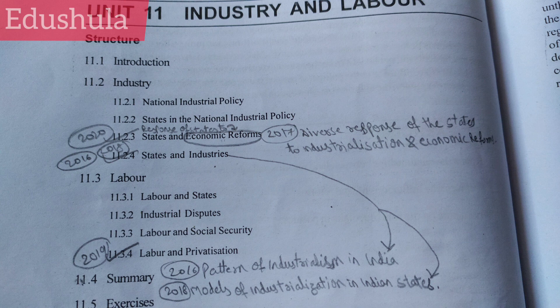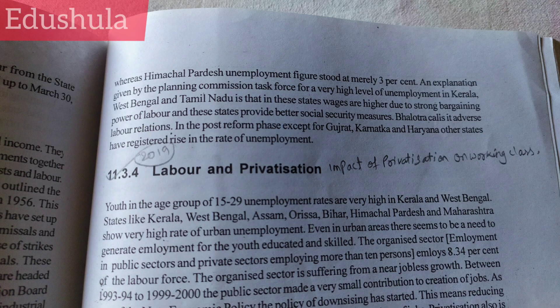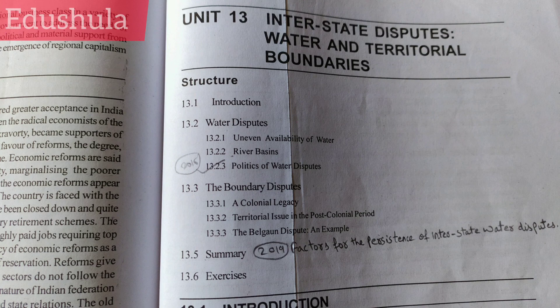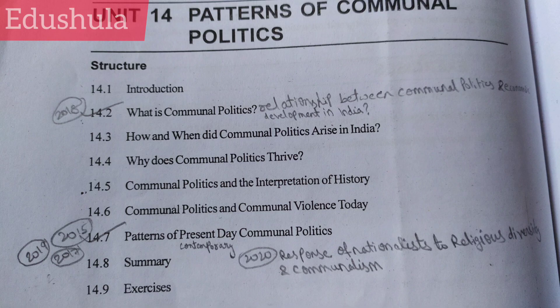State and industries. Impact of privatization on the working class. From Unit 12: Globalization and its impact on state politics. From Unit 13: Politics of water disputes. Factors for the persistence of interstate water disputes.